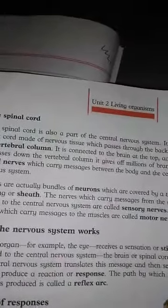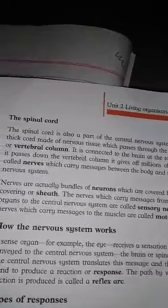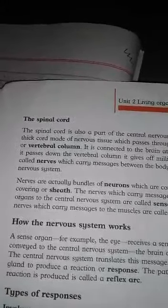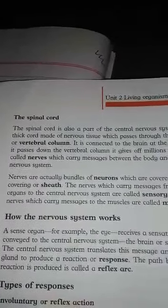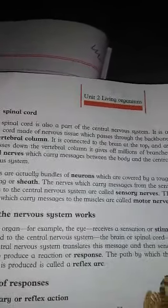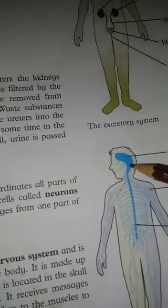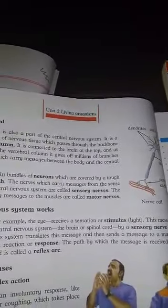The spinal cord is also a part of the central nervous system. It is a thick cord made of nervous tissue which passes through the backbone and vertebral column. It is connected to the brain at the top. The spinal cord gives millions of branches called nerves, which carry messages between the body and the central nervous system.